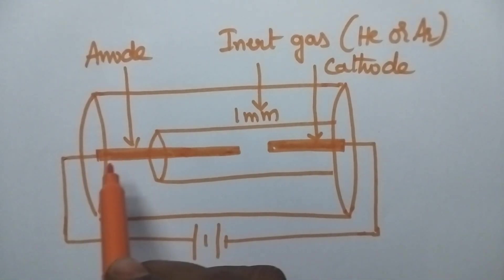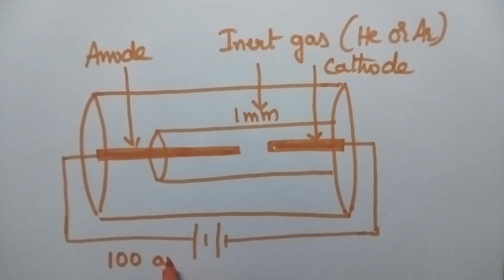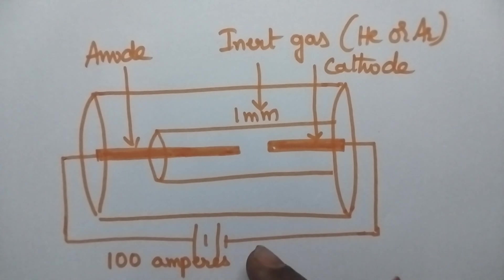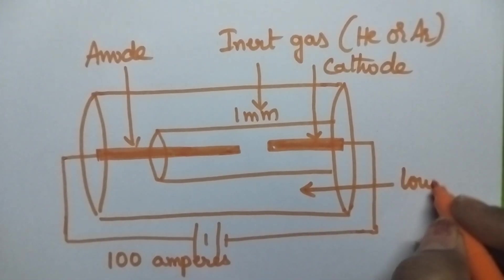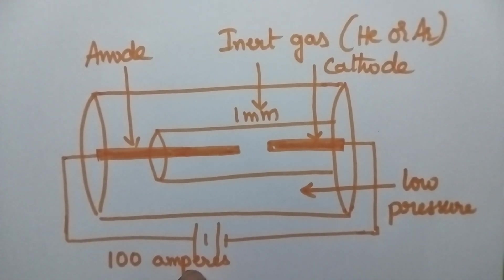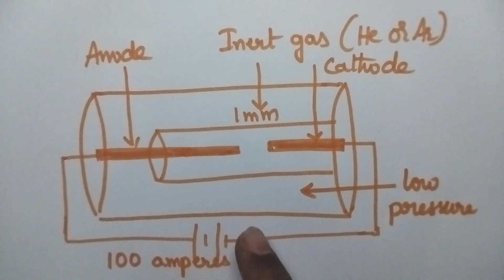These rods are connected to a battery capable of generating 100 amperes of current. At this high voltage in the vacuum chamber, low pressure is maintained. Due to the high electric current and low pressure, high arc discharge takes place.